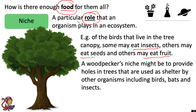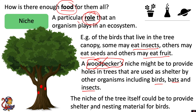For example, a woodpecker's niche might be to provide holes in the trees that are used for shelter by other organisms including birds, bats and insects. And if we were to remove the woodpecker, this would have a big impact on that ecosystem, because it has a particular role to play — without the woodpecker producing lots of different holes in the trees, that's going to affect the ability of other organisms to live in this habitat. And the niche of the tree itself could be to provide shelter and nesting material for birds. So without this tree, you're not going to be able to support a variety of different bird species in the ecosystem.